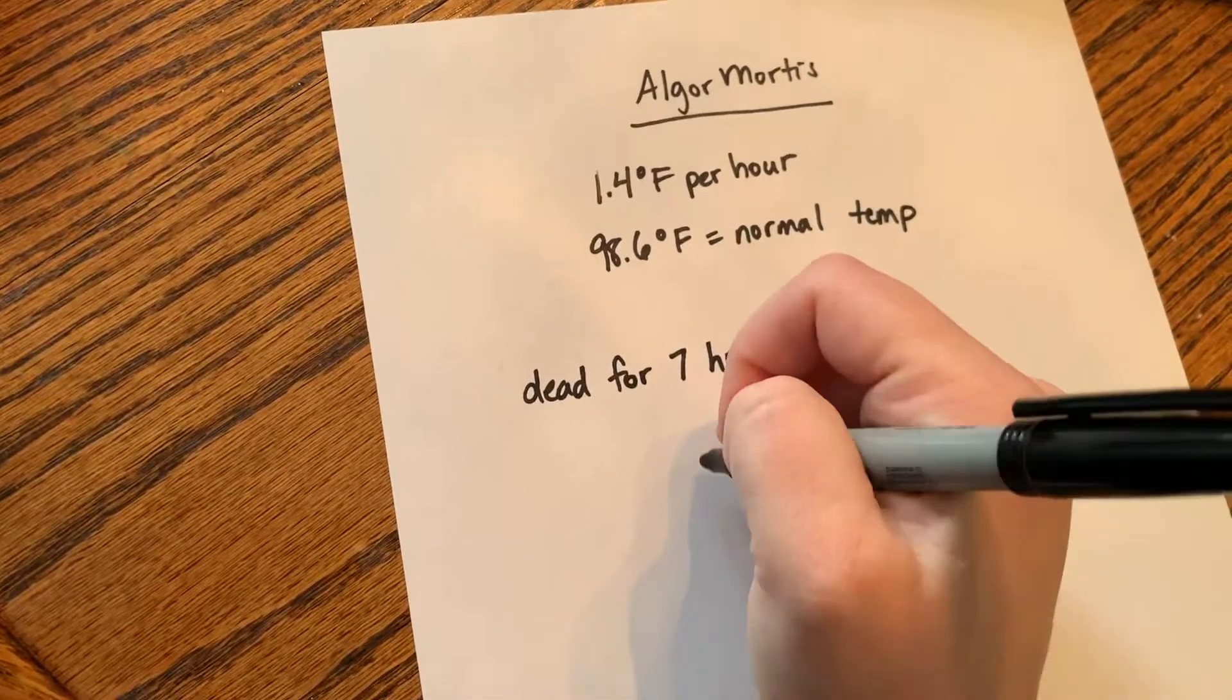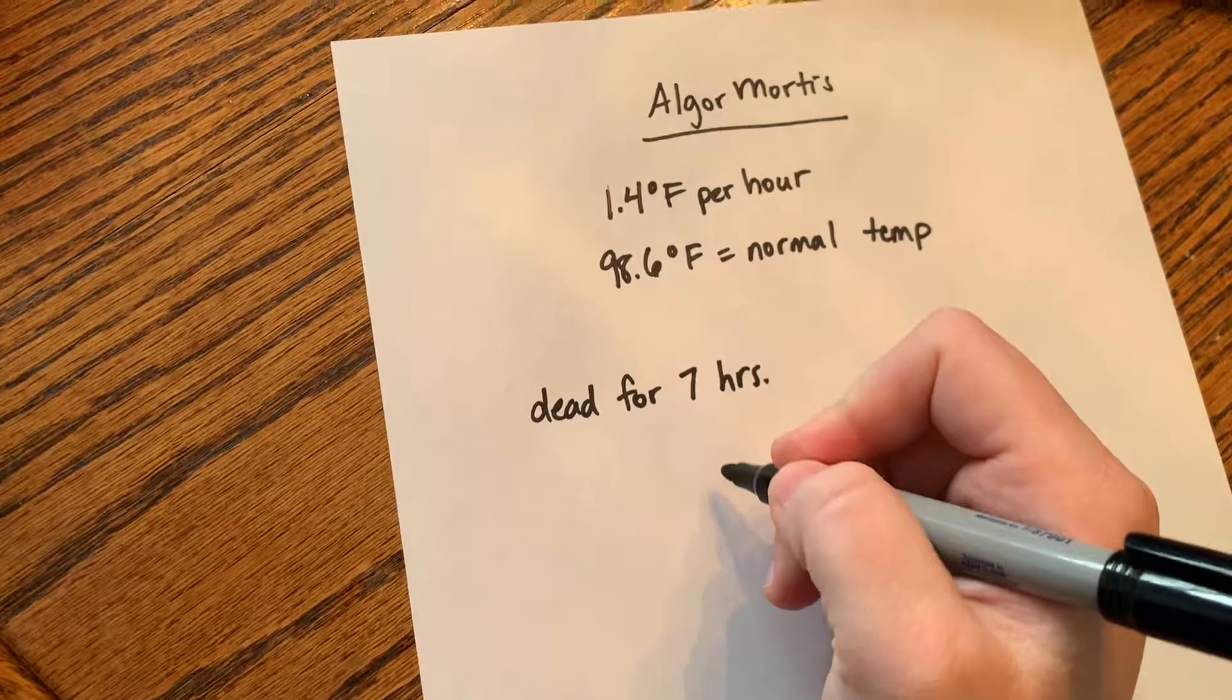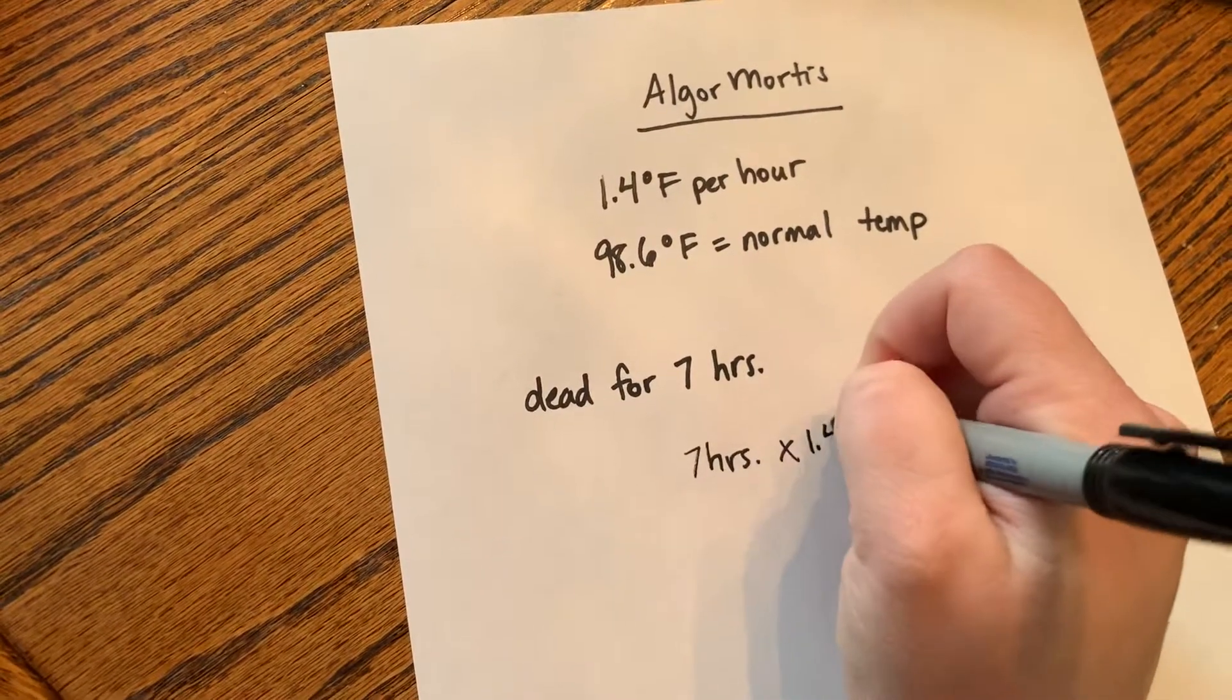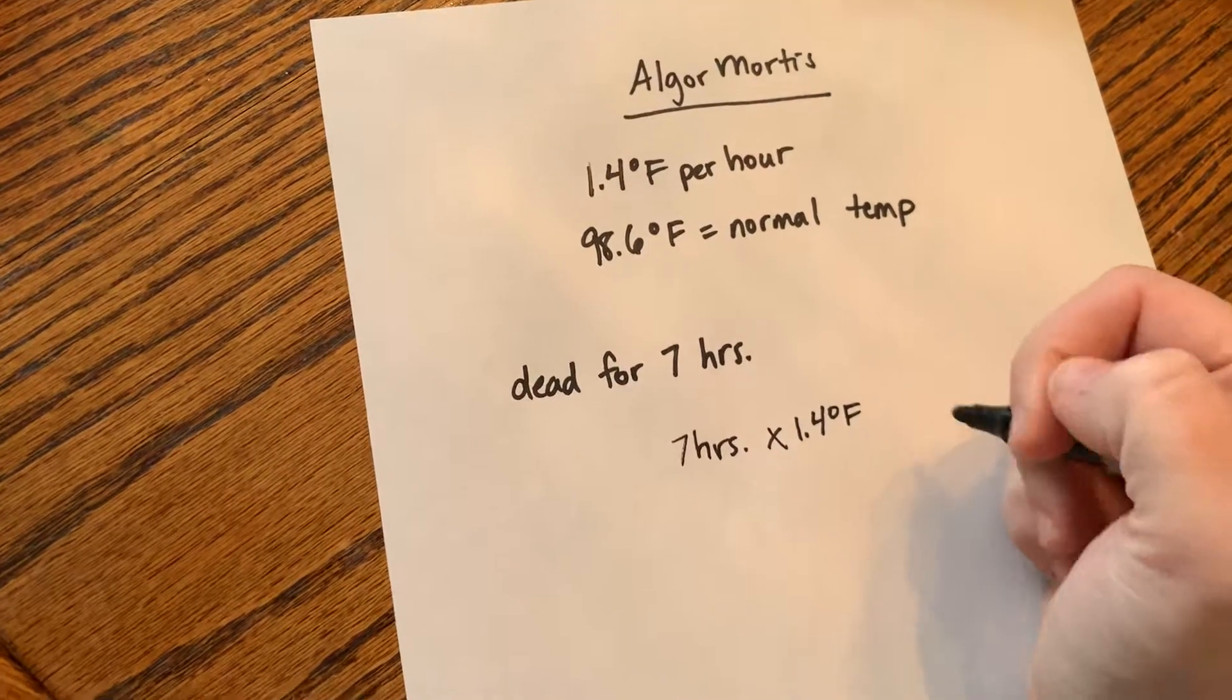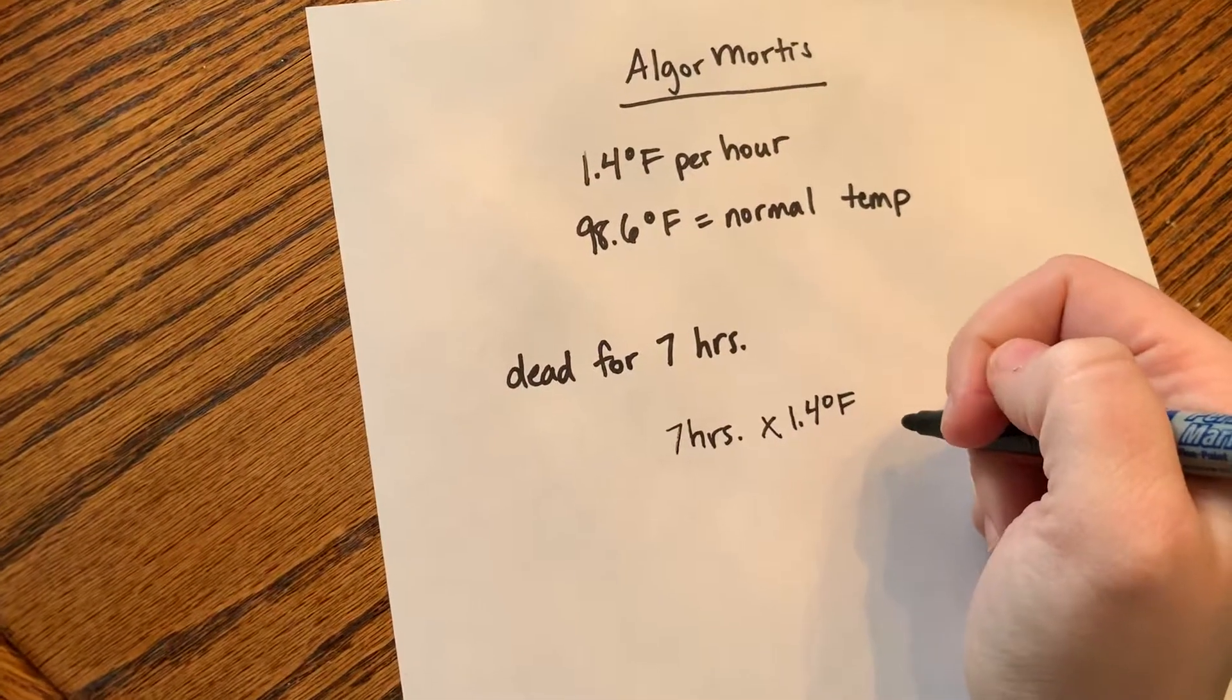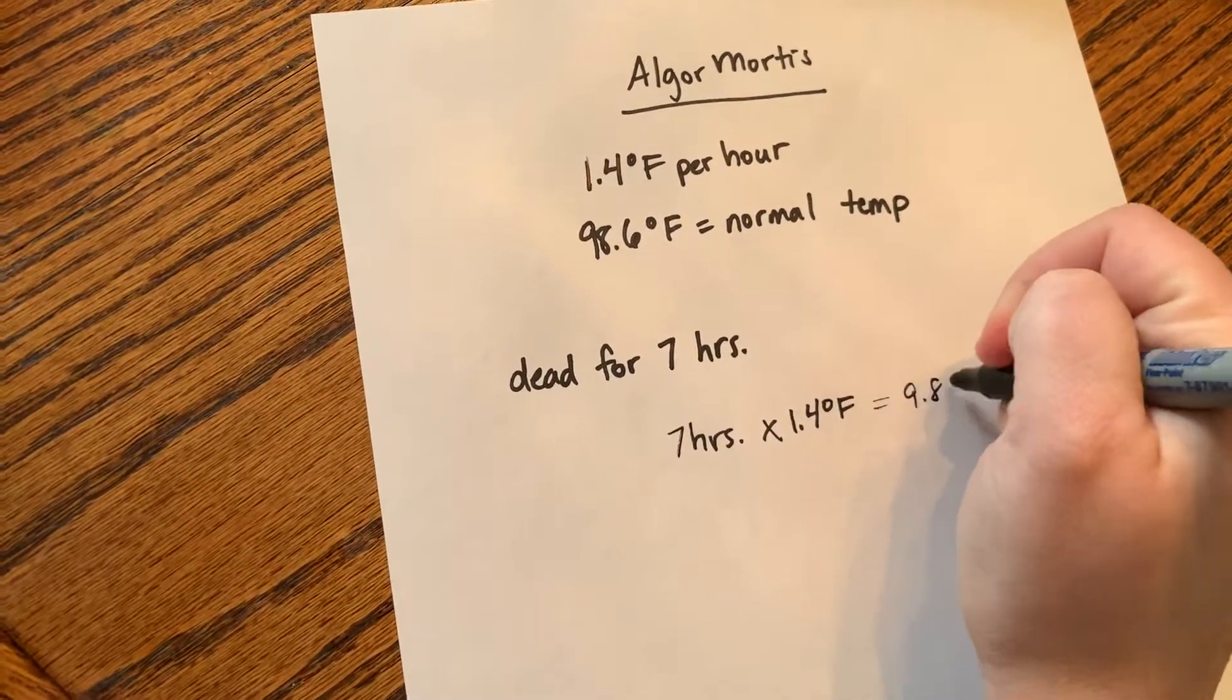What we're going to do to find out what the body temperature should be at this time is to say seven hours times 1.4 degrees Fahrenheit per hour, because that's the rate at which a body loses temperature. And that's going to give us 9.8 degrees.